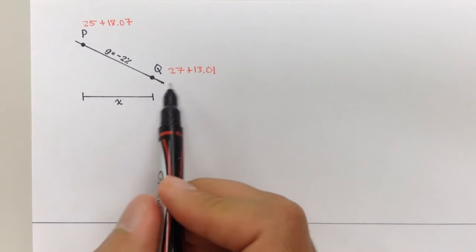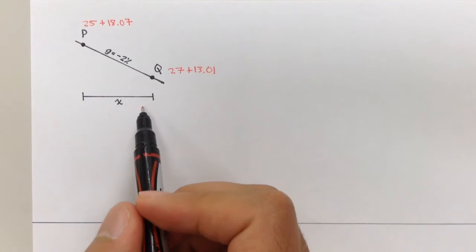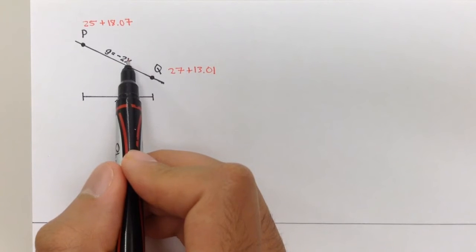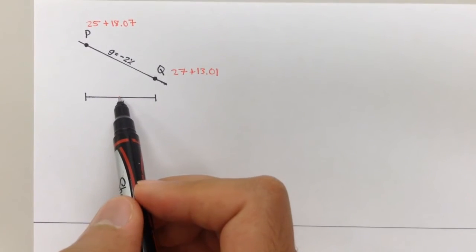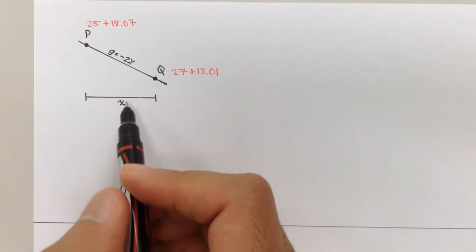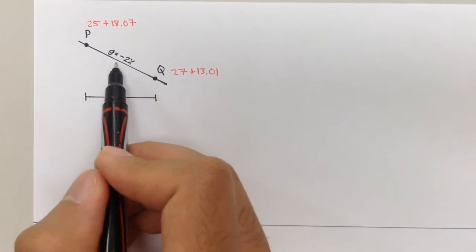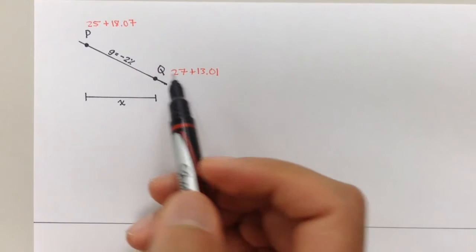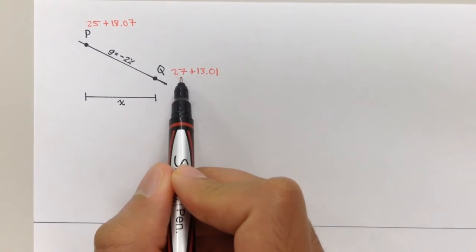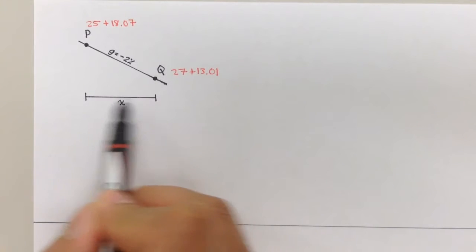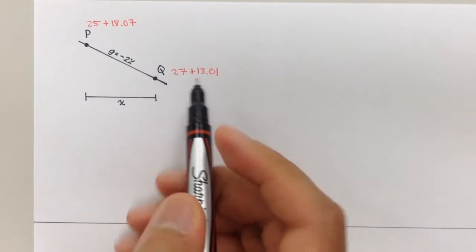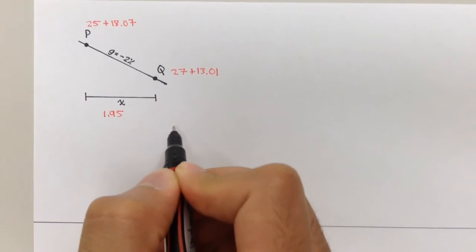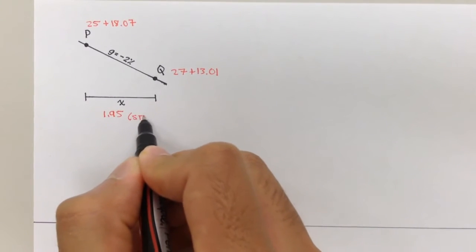Now, to make this a little bit easier, I'm going to do this whole thing in stations. The reason being is I can leave the grade in percent if I'm doing my grade calculations in stations. If it was in lengths, I would have to change this grade from negative 2 percent to negative 0.02 percent.